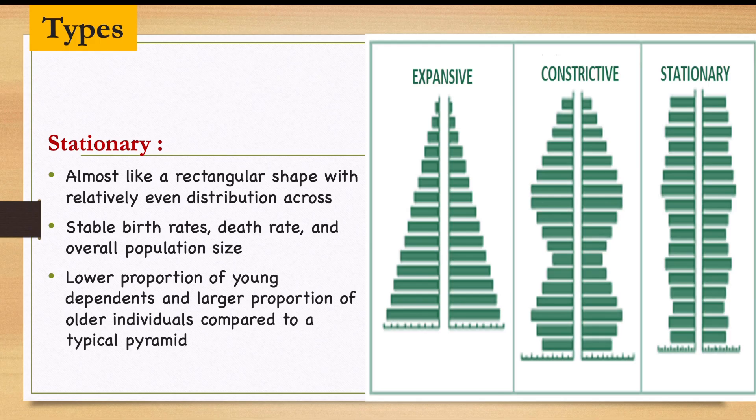There is a lower proportion of young dependents here — the young people depending on the working force are quite manageable. There is also a larger proportion of older individuals, so more people are working, and typically these older people live very long before they die.